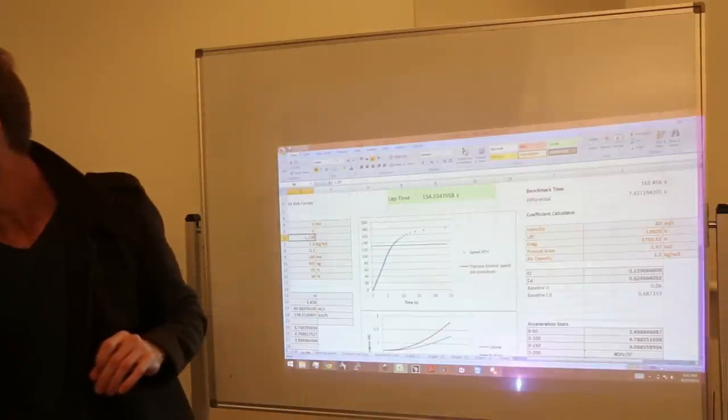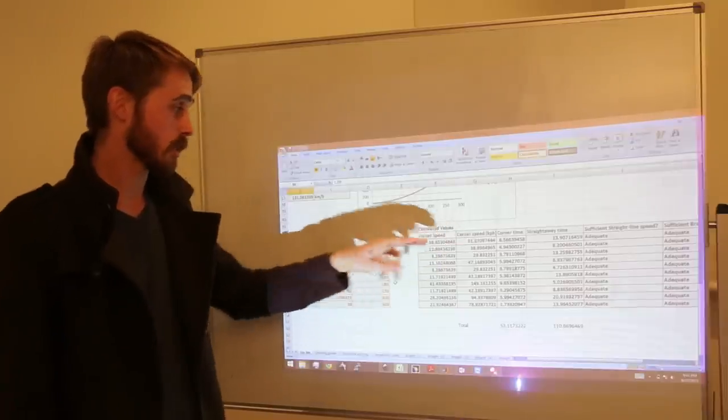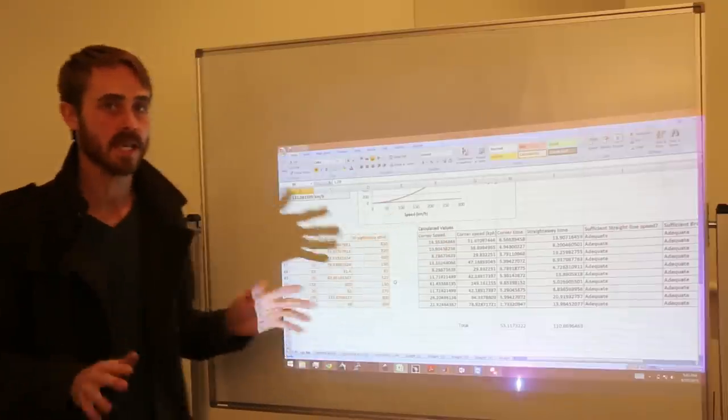But if we remove the downforce completely, we can see that our speeds, while they don't change much in the low speed corners, still 51, 38, not much of a big change. So we can see that around this 50 K an hour mark,